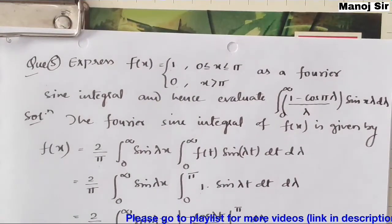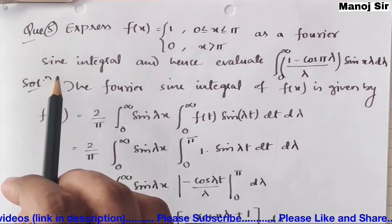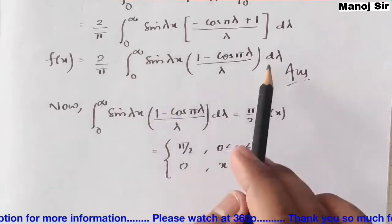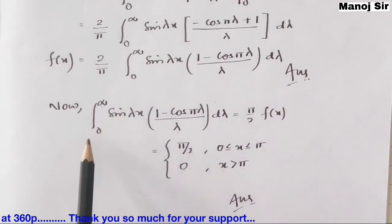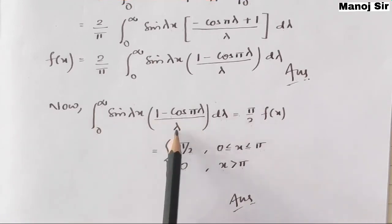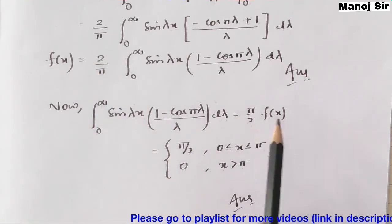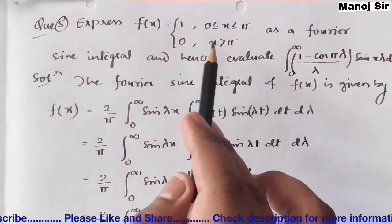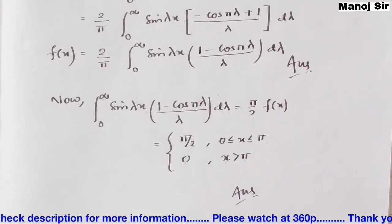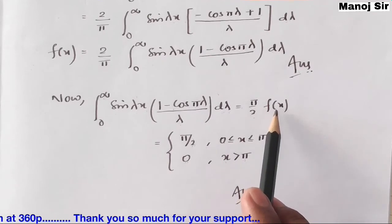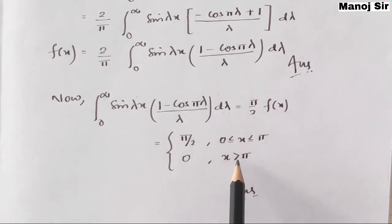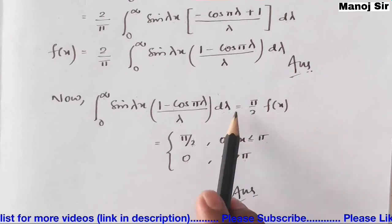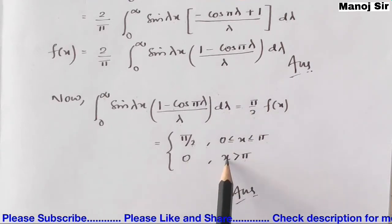The question asks for two things: the Fourier sine integral (just found) and the evaluation of the given definite integral. To evaluate integration from 0 to infinity of sin(λx)(1 − cos(πλ))/λ dλ, we rearrange: this equals (π/2) · f(x). Since f(x) = 1 for 0 < x < π and f(x) = 0 for x > π, multiplying by π/2 gives π/2 when 0 < x < π, and 0 when x > π.